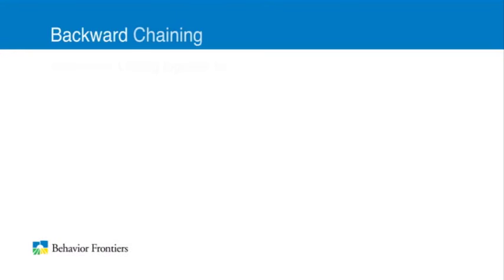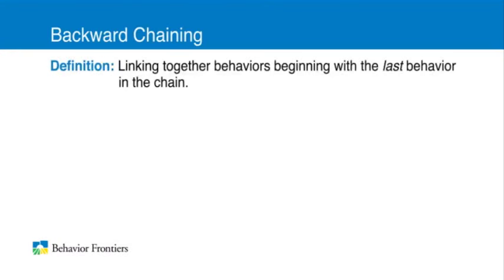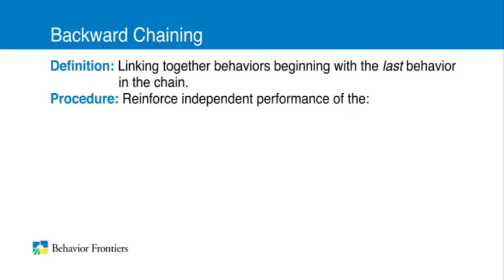Now let's look at how to perform backward chaining. The definition of backward chaining is linking together behaviors beginning with the last behavior in the chain. Let's go through the procedure with the same example of washing hands, in order to see how this type of chaining differs from forward chaining.